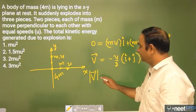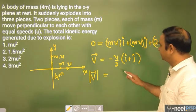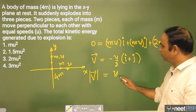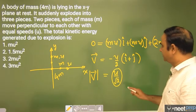We need speed, so what will be the speed of the third particle? This is u by 2 into root 2, so u by root 2, this is the speed.